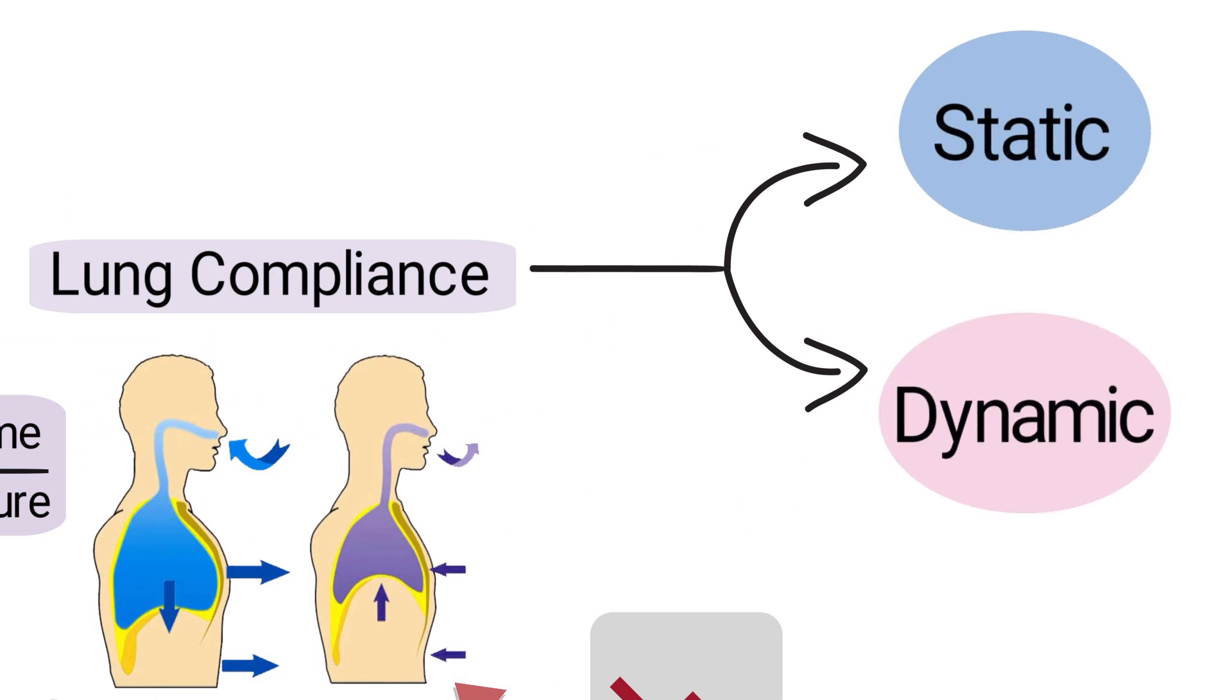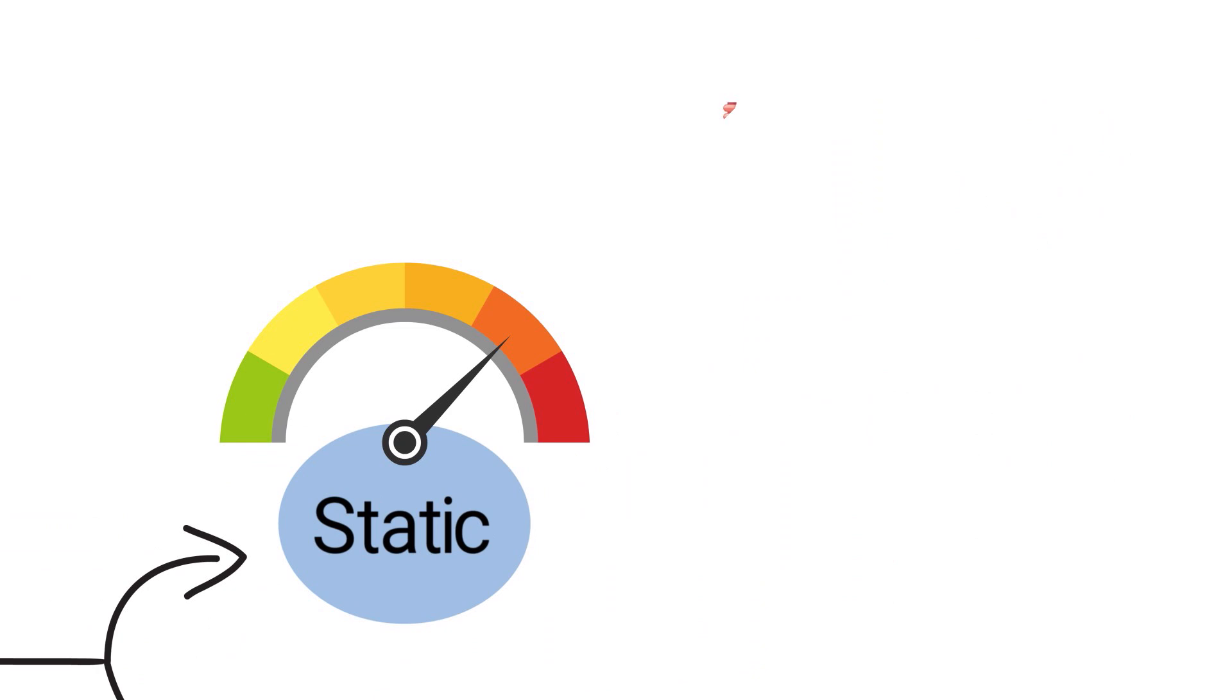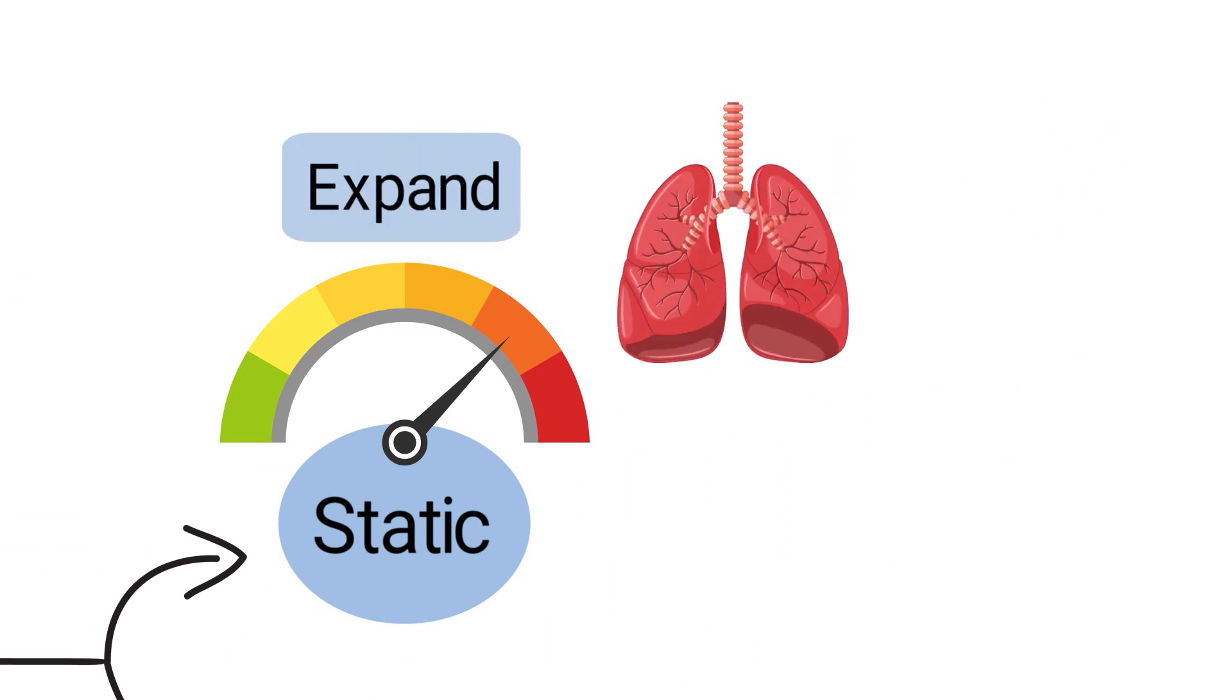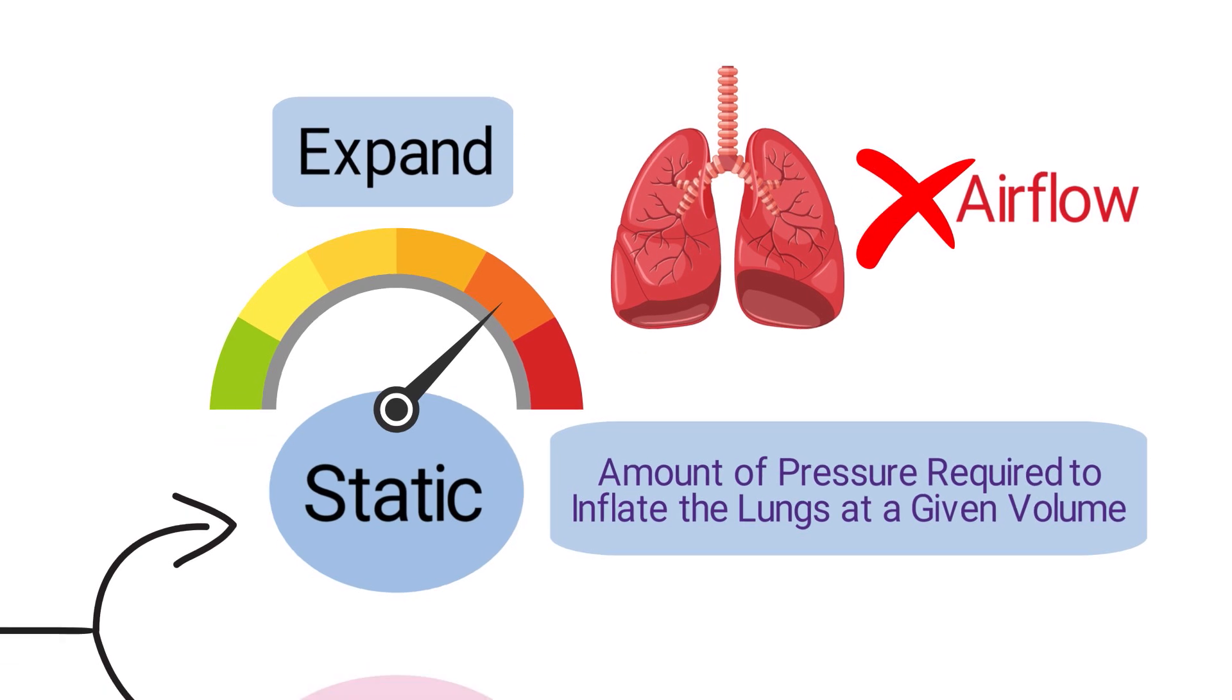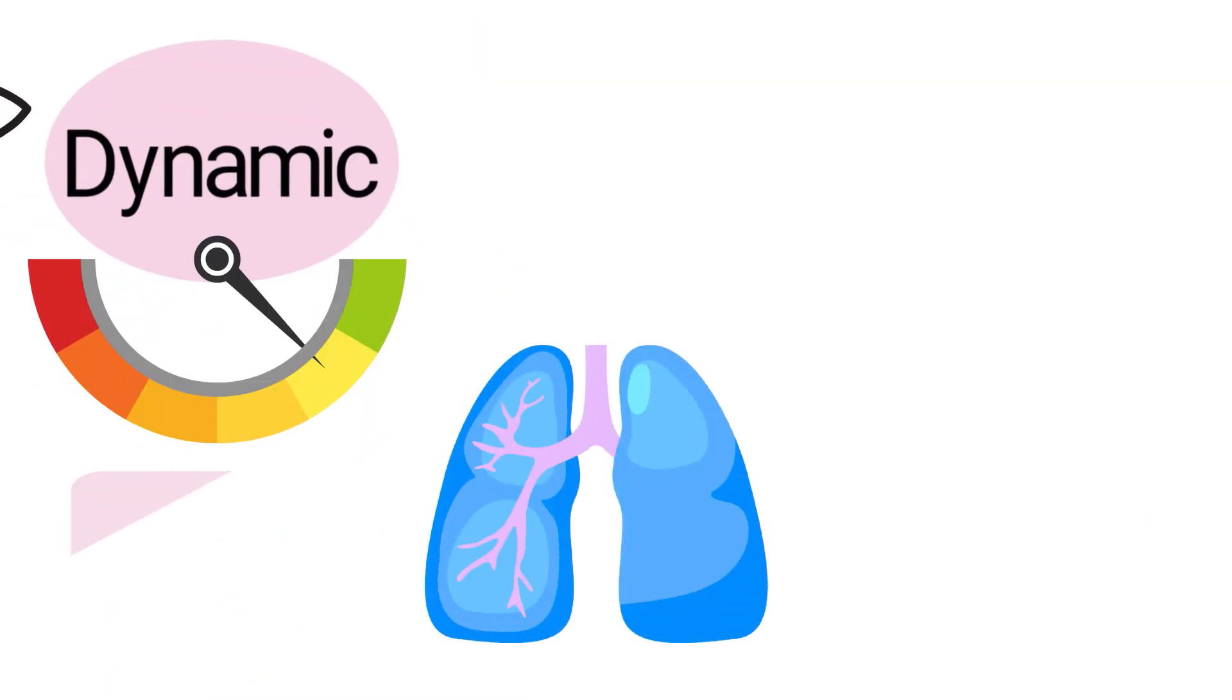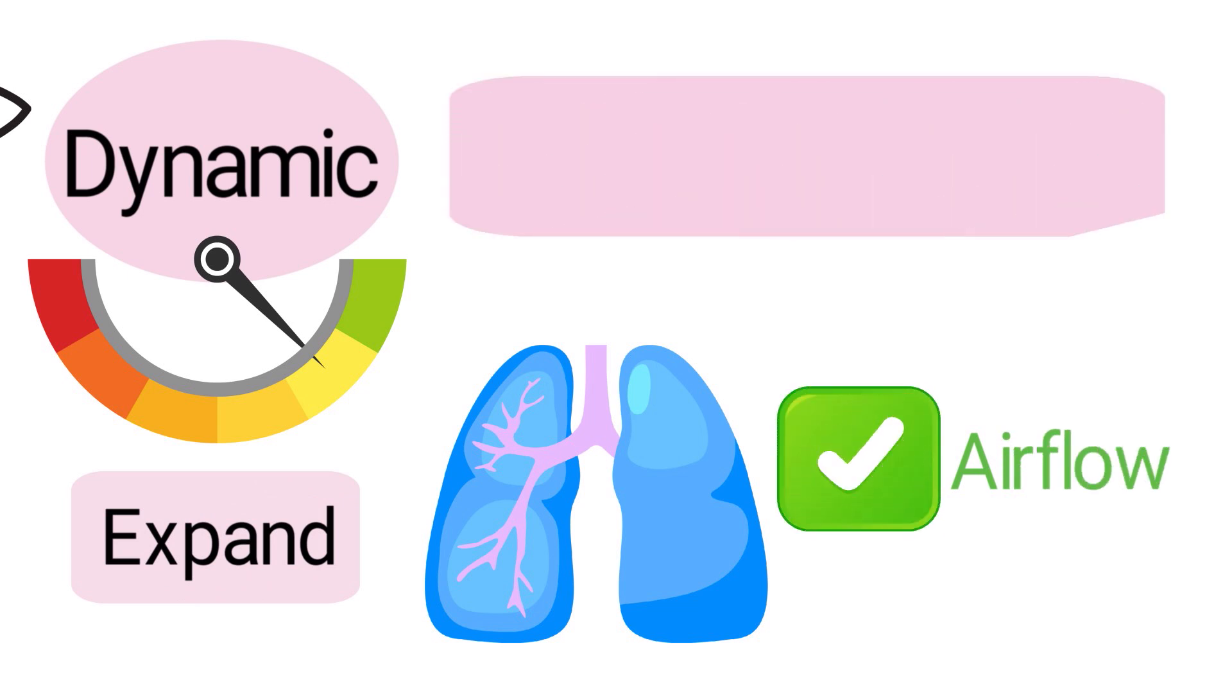Static compliance is the measure of the lungs' ability to expand when there is no airflow. It is determined by the amount of pressure required to inflate the lungs at a given volume. Dynamic compliance is a measure of the lungs' ability to expand when airflow is present. It is determined by the amount of pressure required to produce a given flow rate.